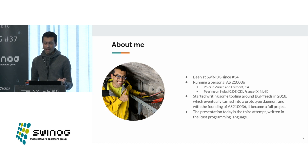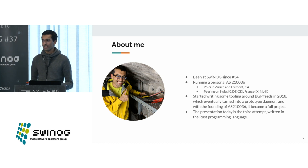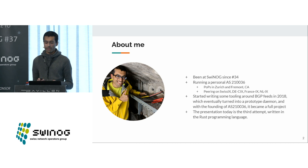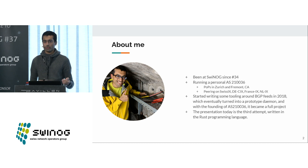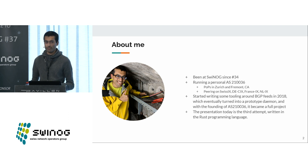I started becoming interested in BGP around 2018 when I was doing my masters at ETH and working with some research groups there, looking at what kind of academic work was going on in the space and trying to write more automation and pulling in BGP feeds. I realized I really wanted to do more code in this space and wondered how to integrate with BGP implementations, and that led me to, in the end, make my own implementation. This is the third attempt, written in Rust.